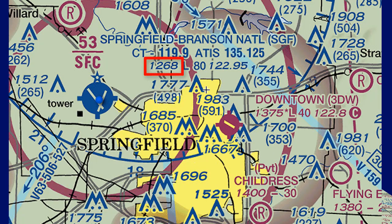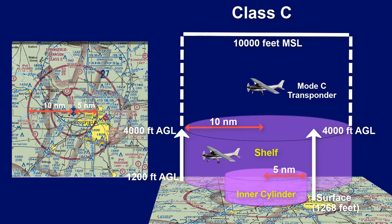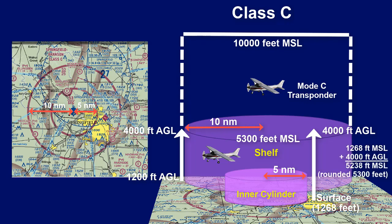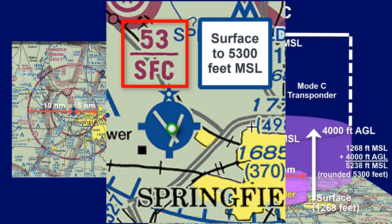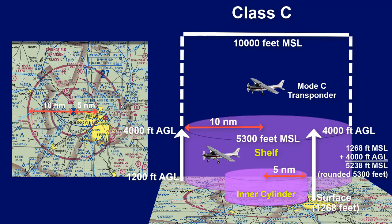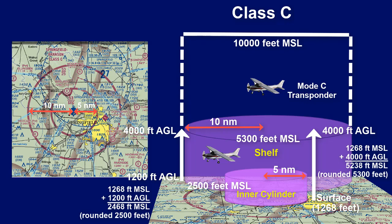For Springfield Branson National Airport, the inner cylinder starts at the surface at 1,268 feet MSL, which is the airport elevation shown on the chart, rising to 5,300 feet MSL. 1,268 MSL plus 4,000 feet AGL equals 5,238 feet MSL, rounded up to 5,300 feet MSL as seen on the chart. The shelf starts at 2,500 feet MSL — take the 1,268 feet elevation and add 1,200 feet.